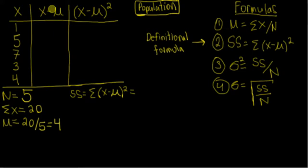Now we're going to move on to this column right here. We have x minus mu. So all we're going to do is calculate x minus mu and put that value in this column. So we have 1 minus 4 is going to give us negative 3. 5 minus 4 is going to give us positive 1. 7 minus 4 is going to give us positive 3. 3 minus 4 is going to give us negative 1. And 4 minus 4 is going to give us 0.